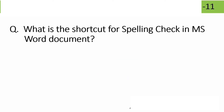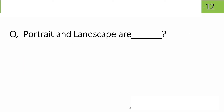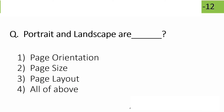What is the shortcut key for spelling check in MS Word? Options: F7, F70, Ctrl+F7, Alt+F7. The correct answer is F7 — F7 is the spelling check shortcut in MS Word.